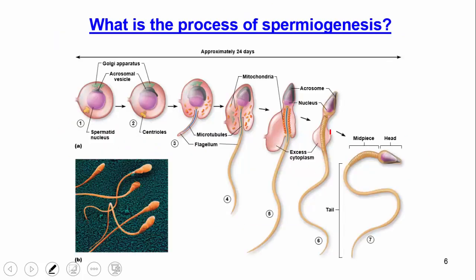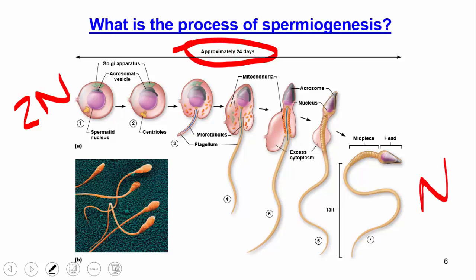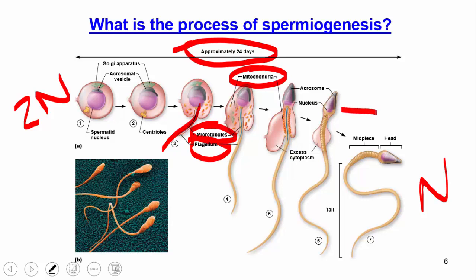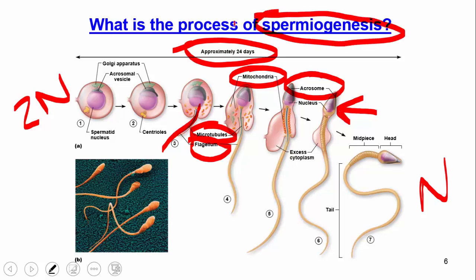The process of producing sperm is called spermiogenesis and takes approximately 24 days. It starts with a 2N cell and ends with a fully functional N sperm. The sperm is the only human cell with a flagellum — composed of microtubules — which aids motility. Sperm also contain many mitochondria for energy. Essentially, sperm is a packet of DNA with an acrosome at the tip: proteins and enzymes that help the sperm penetrate the egg during fertilization.